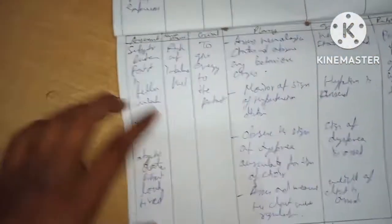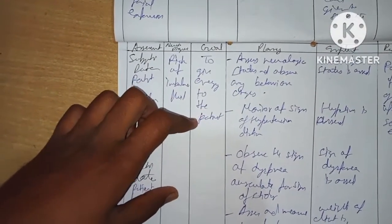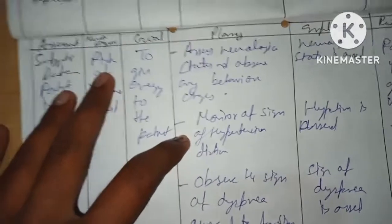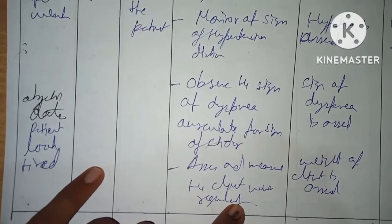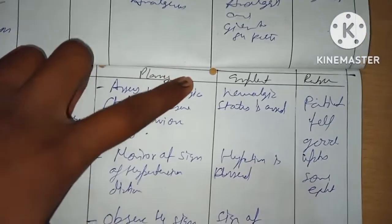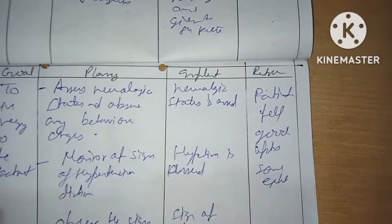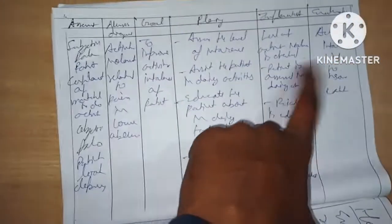Evaluation: pain reduced to some extent; patient is able to sleep. NCP 2: Subjective data — patient is feeling weak. Objective data — patient looks tired. Nursing diagnosis: risk of imbalanced energy or ineffective tissue perfusion. Planning: assess neurological status, monitor signs of hypertension, observe signs of dyspnea, assess weight. Implementation: neurological status assessed, hypertension assessed, dyspnea assessed, weight assessed. Evaluation: patient feels good to some extent.